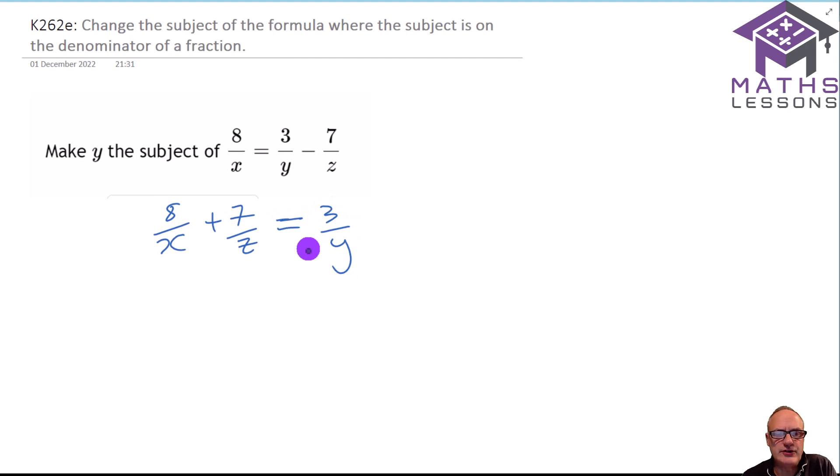Now there's a nice neat little trick here. We could reciprocate this to get the y on the top, or we could times everything by y and then divide by all the rest. But even that is going to be nasty with this as it is. So what we need to do is turn this into a single fraction first before we do all of that.